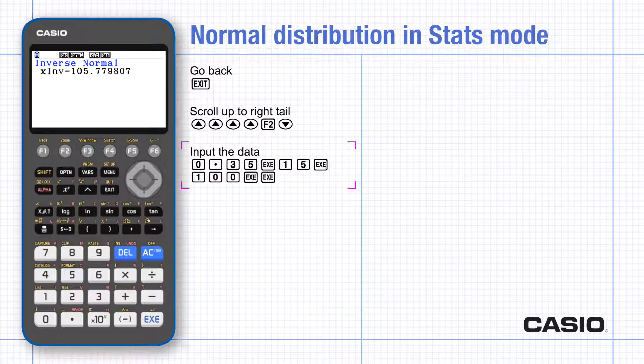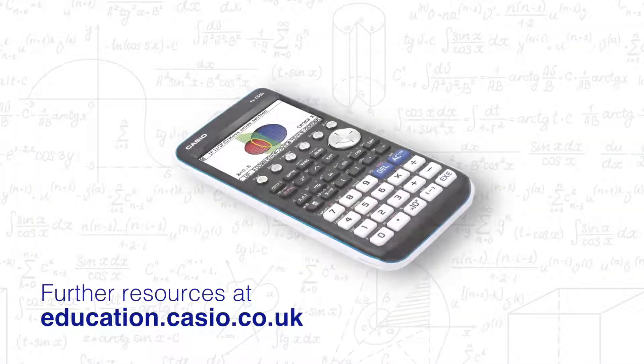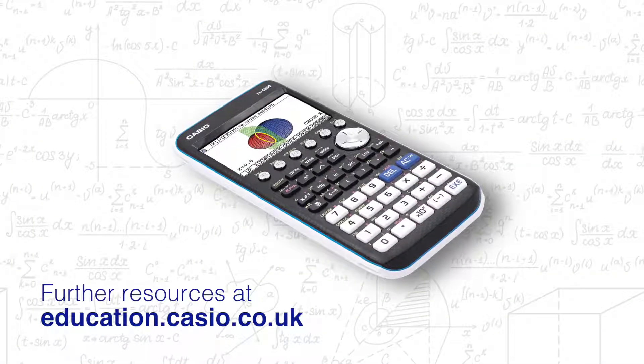For questions with an unknown mean or standard deviation, trial and improvement can be used with the techniques above. A more traditional way is to use a coding method using the CG50 to find the boundary values from the normal 0,1 distribution. You can find additional resources at education.casio.co.uk